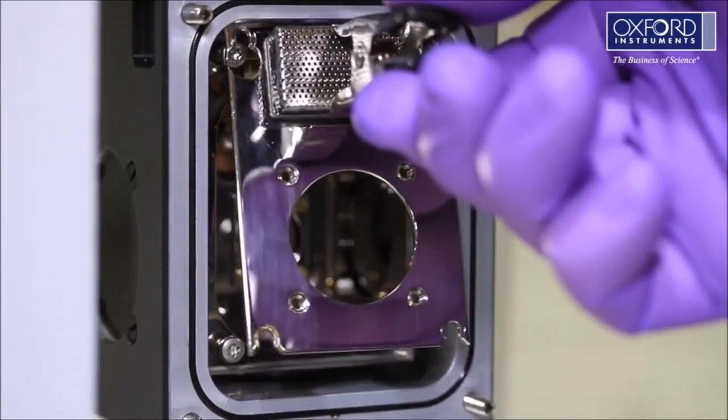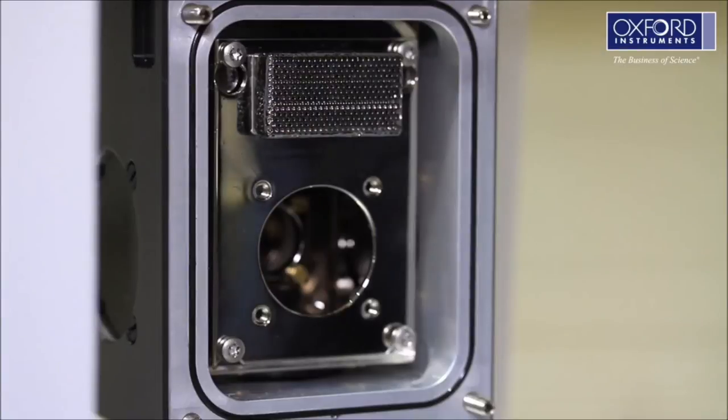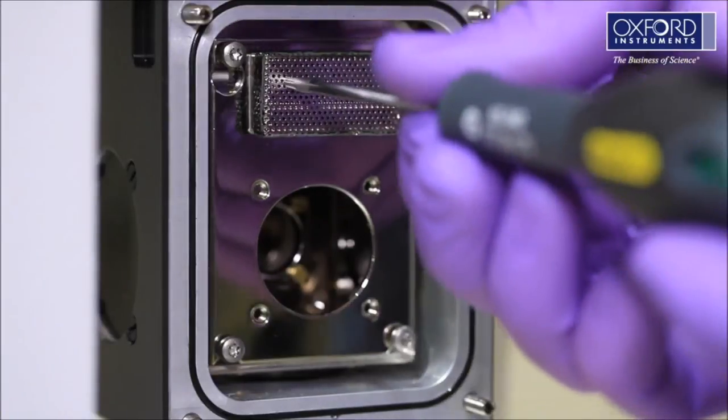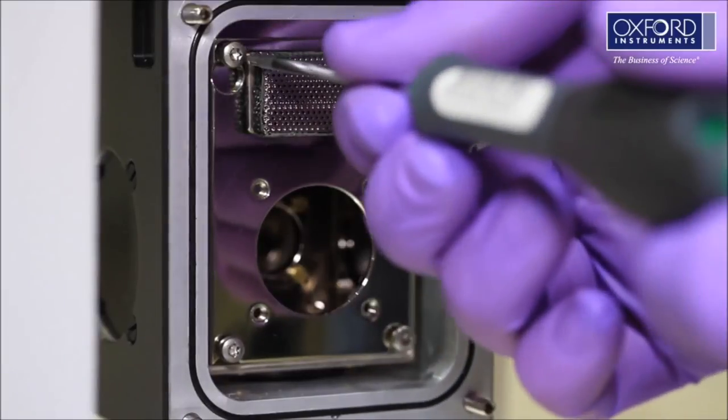Remove the radiation shield plate from the hot plate where you have been conditioning the sorption pump. Refit it as shown. Please note, this will now be hot, so you must take care not to burn yourself.